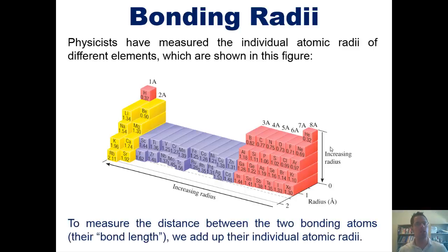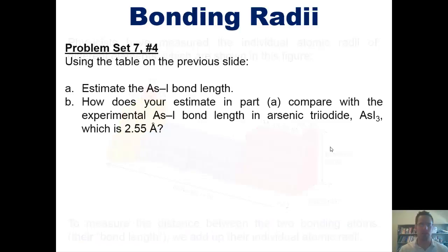To measure, then, the distance between two bonding atoms, their bond length, we add up their individual atomic radii. That takes us to some problems. Using the table that I just showed, you estimate the arsenic-iodine bond length. Then, see how well your estimate compares to experimental bond length for arsenic triiodide, AsI3, which happens to be 2.55 angstroms.